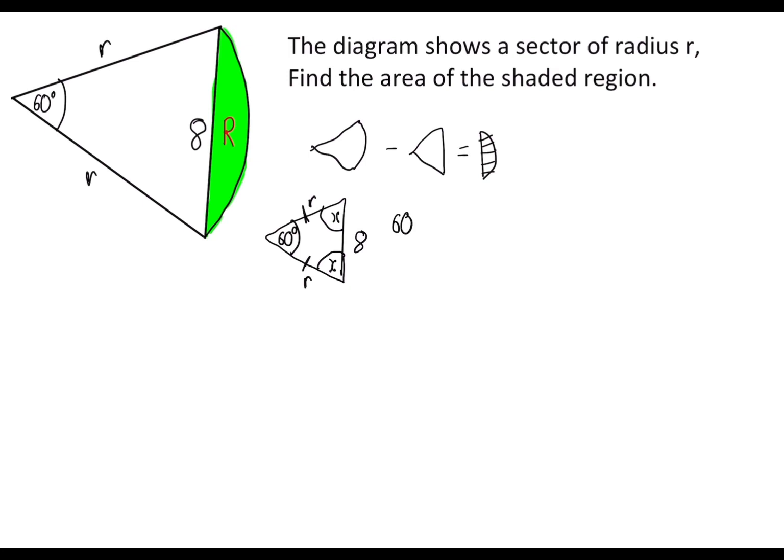Now remember angles in the triangle add up to 180. So if we add up all these angles we're going to get 180. Now we have an equation. If we take away 60 from both sides we have 2x equals 120. Dividing both sides by 2 we get x equals 60.